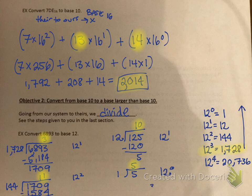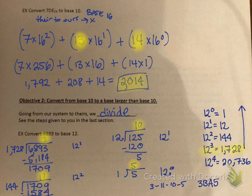I have 3, 11, 10, 5 — but I can't leave two-digit numbers as-is. Using our special letters: 3 stays as 3, 11 becomes B, 10 becomes A, and 5 stays as 5. Then I add the subscript 12 to indicate base 12. So the answer is 3BA5 base 12.